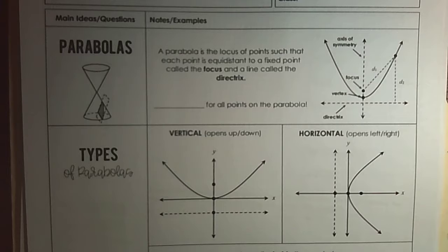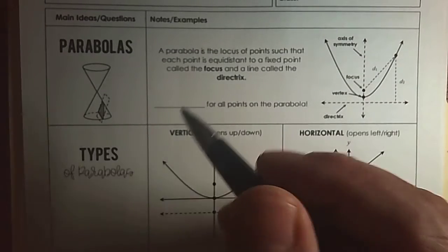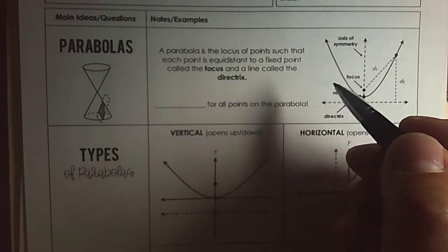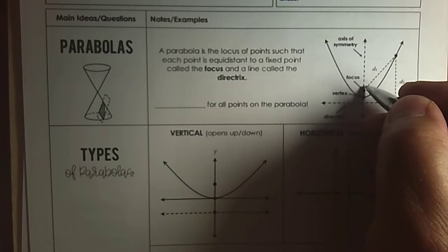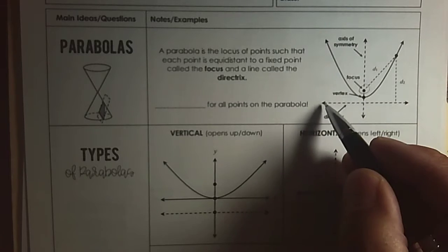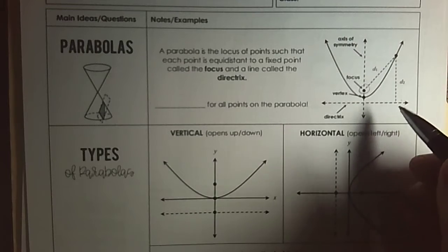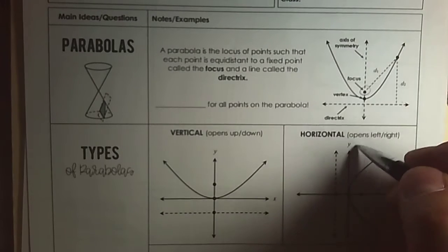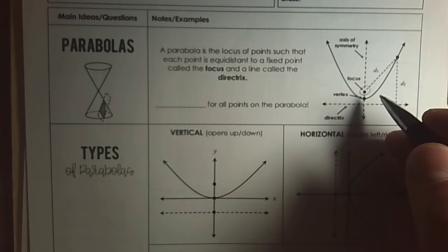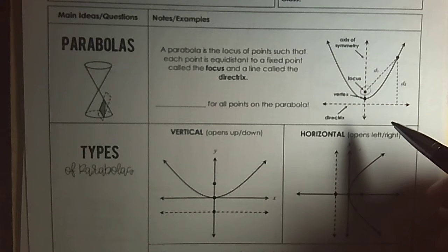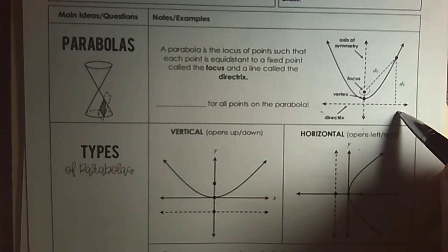This is going to be awesome and crazy at the same time. A parabola is the locus of points such that each point is equidistant to a fixed point called the focus and a line called the directrix. The shape is something you're familiar with. We're going to have a focus like we did for the hyperbola and ellipse, and something new called the directrix. Today a parabola could go up, down, right, or left — that's completely different. A quadratic function can only go up or down, but as a conic section it has more options.